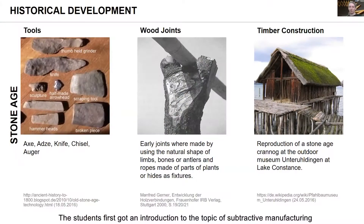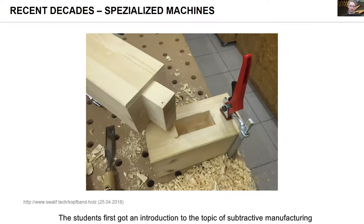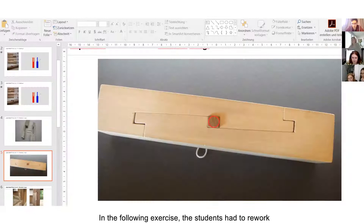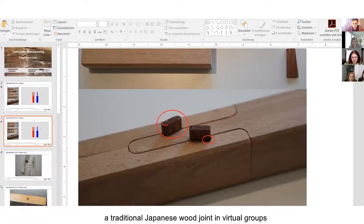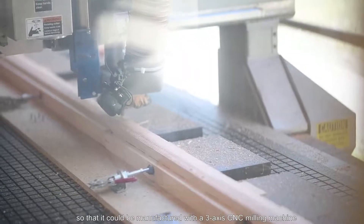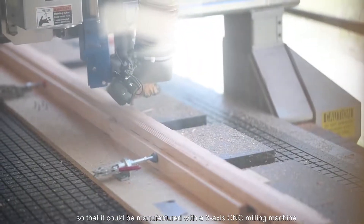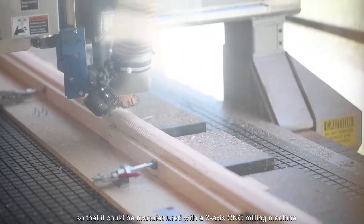The students first got an introduction to the topic of subtractive manufacturing and learned the software for CNC programming. In the following exercise, the students had to rework a traditional Japanese wood joint in virtual groups so that it could be manufactured with a three-axis CNC milling machine.